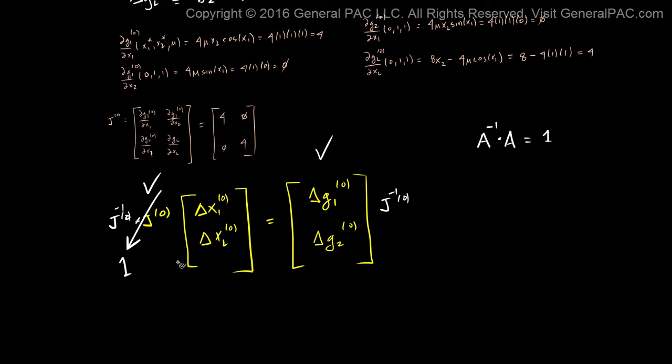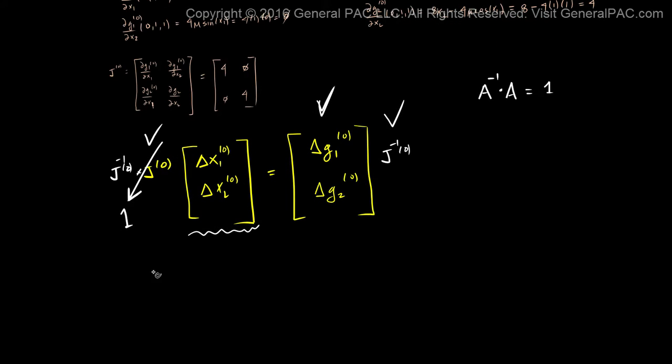And the only thing that's going to be left on the left-hand side of the equations are these guys there. And the right side of the equation, we already knew what this value is. And we could determine the inverse of the Jacobian matrix here.